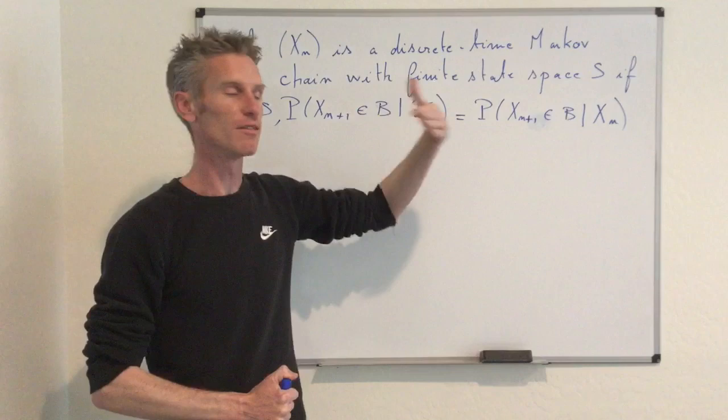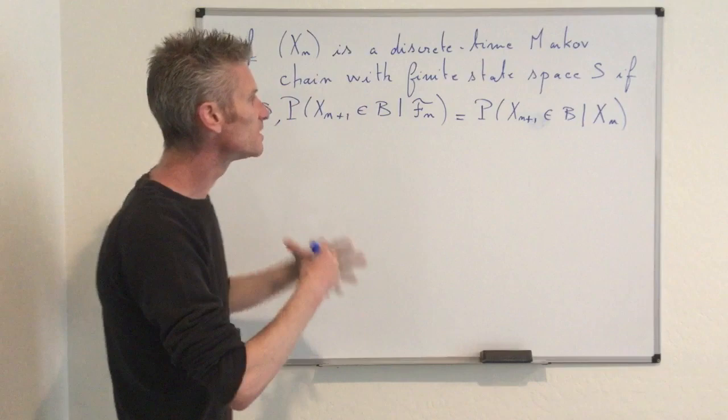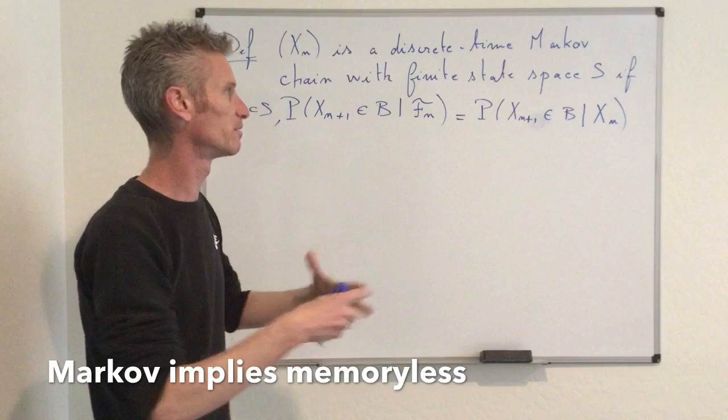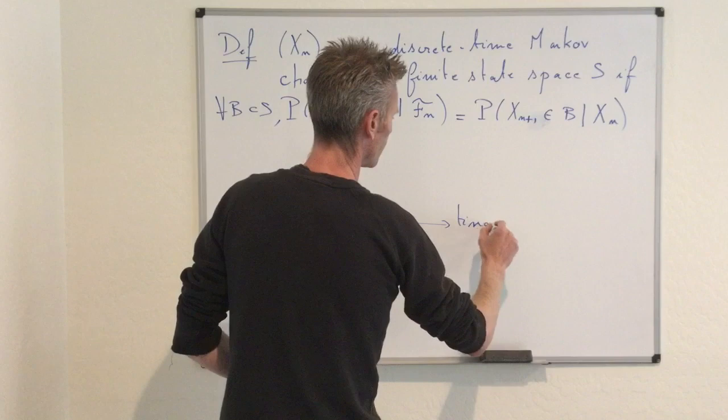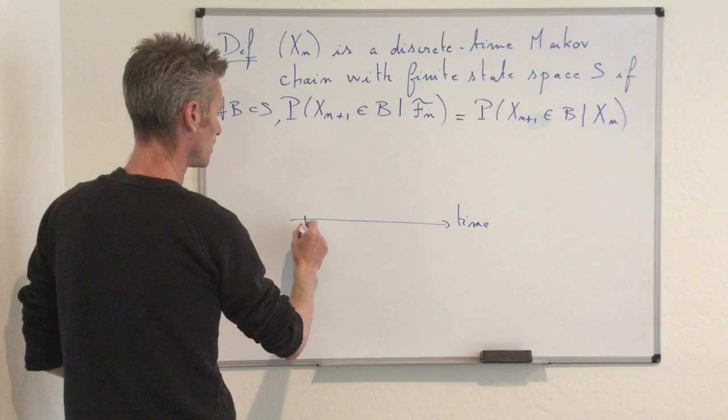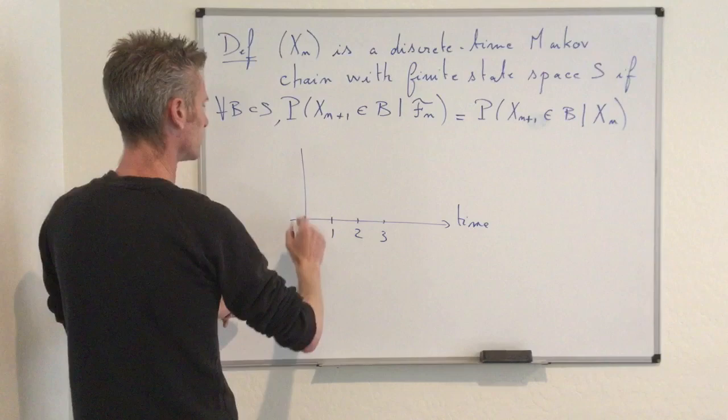Given the past including the present, probabilities of events in the future only depend on the present. So this means that a Markov chain implies memoryless — that's the good way to think about it. Let's draw a little picture to show what this means. Let's assume this is a time axis, and since we are in discrete time, we have times zero, one, two, and so on. Adding a vertical axis representing S the state space, the process can start from a state here, then jump here, then here, and so on.